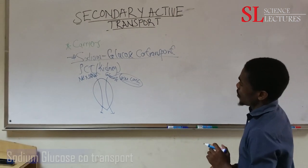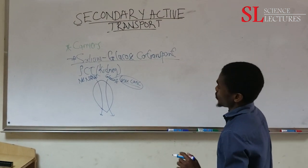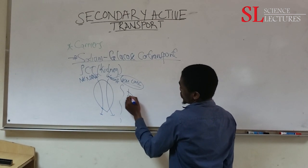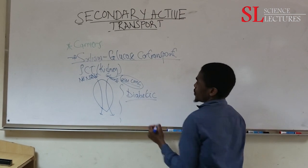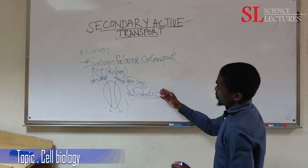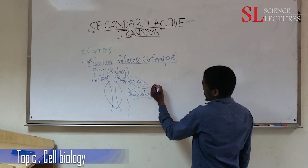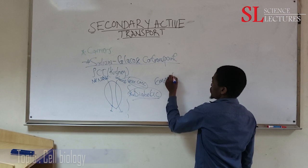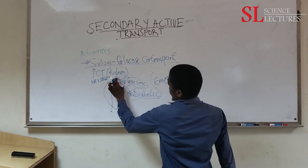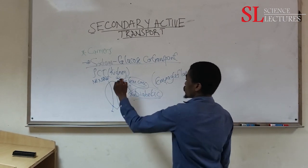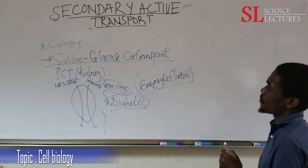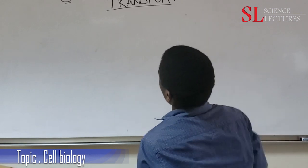An application of this is in diabetic patients. We can give a drug like empagliflozin, which inhibits the sodium-glucose co-transporter. When this carrier is inhibited, less glucose is absorbed back into the body, so diabetic patients end up releasing more glucose in their urine, reducing glucose concentration in the blood.